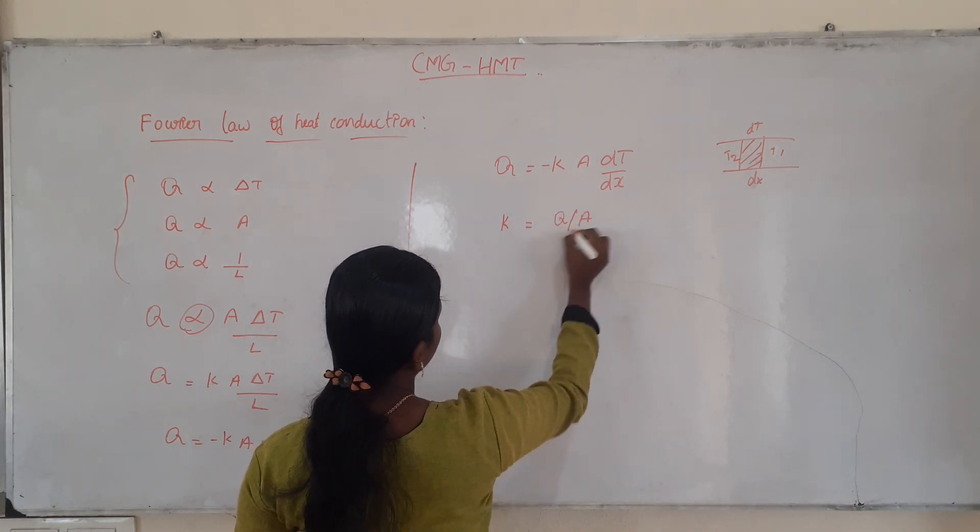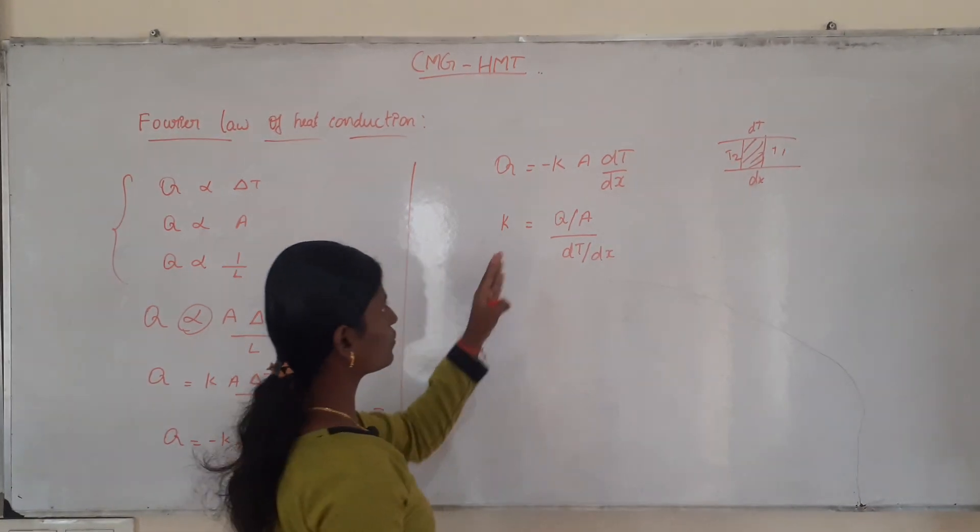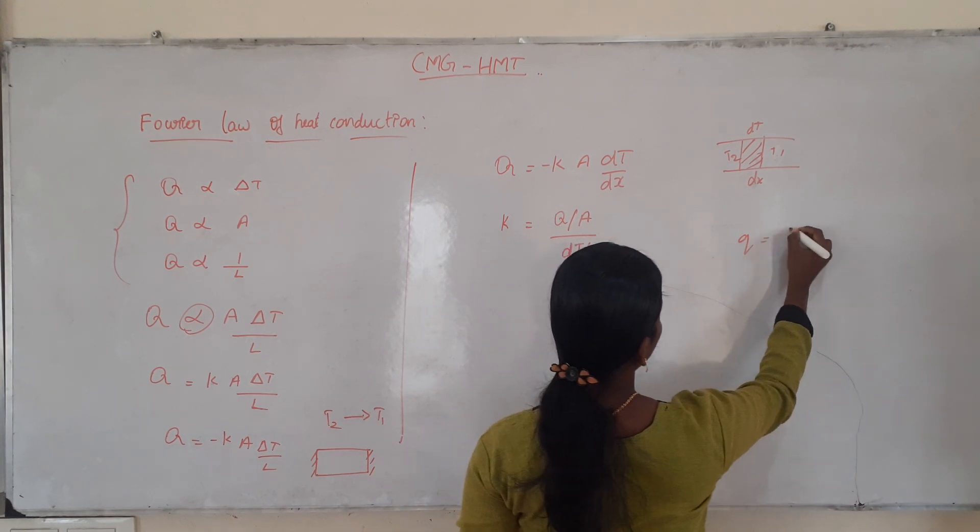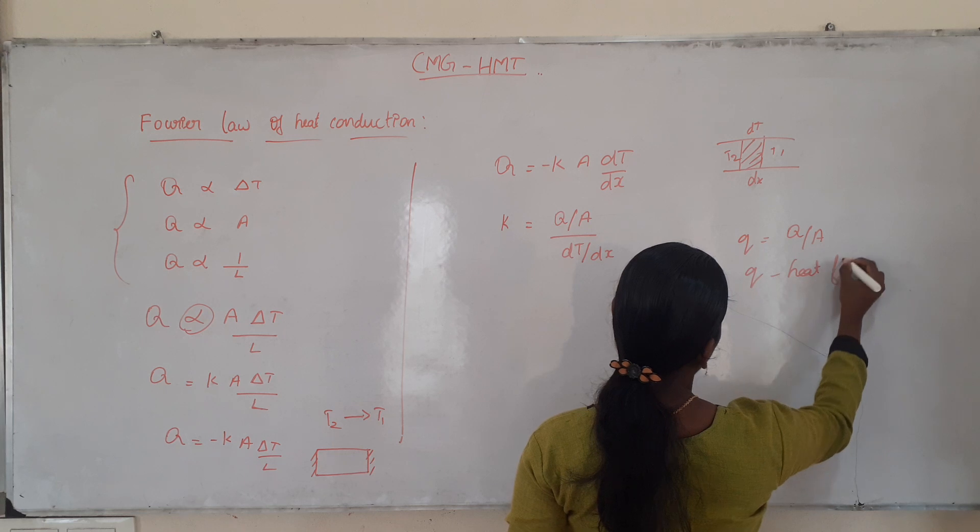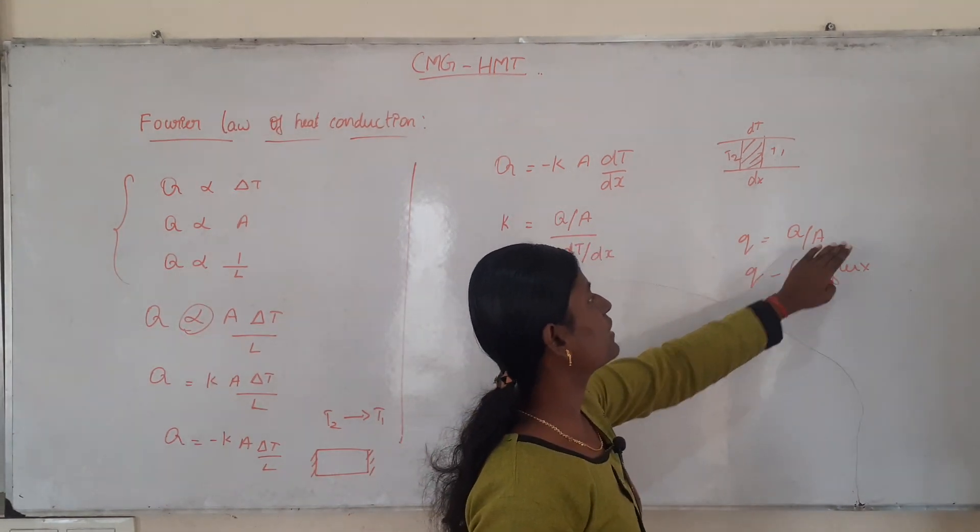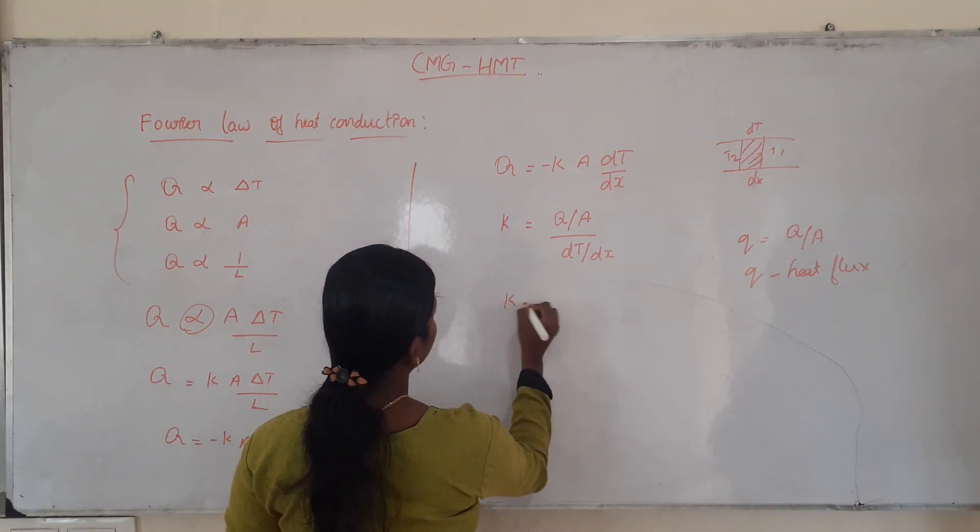q by a, we have to understand q equal to Q by A. That is heat flow rate per unit area, that is the heat flux.